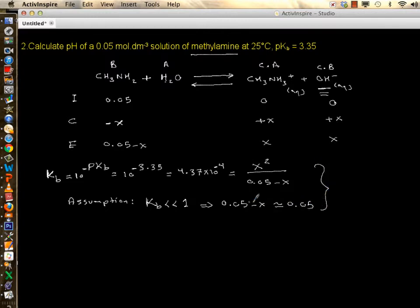And if you solve x and it's not reasonable, then solve it quadratically. But until then, try to use assumption. So 4.37 times 10 to minus 4 becomes x squared over 0.05.